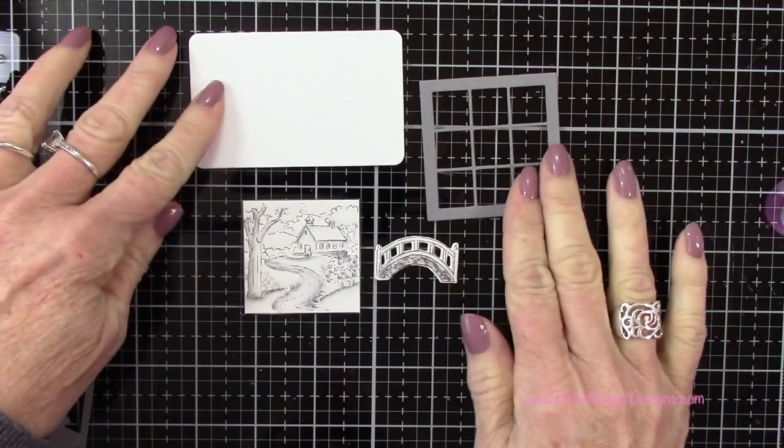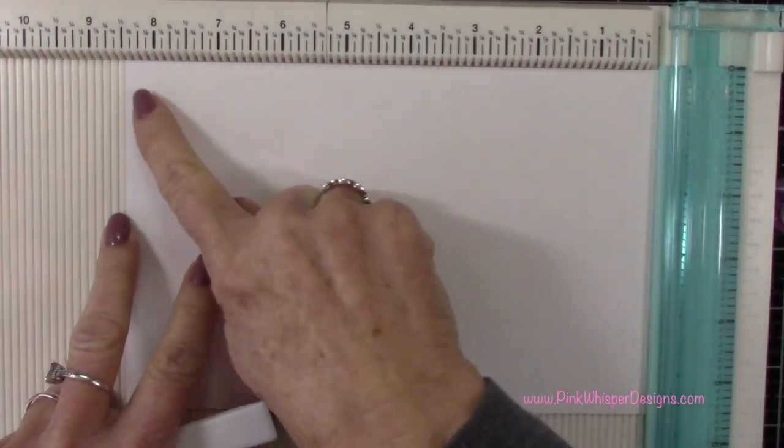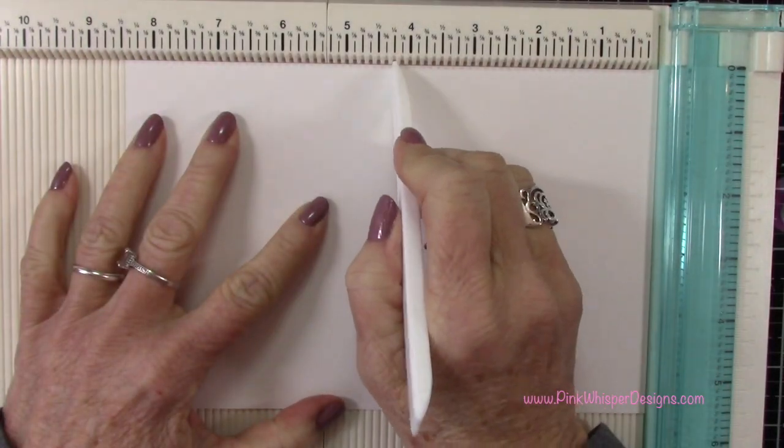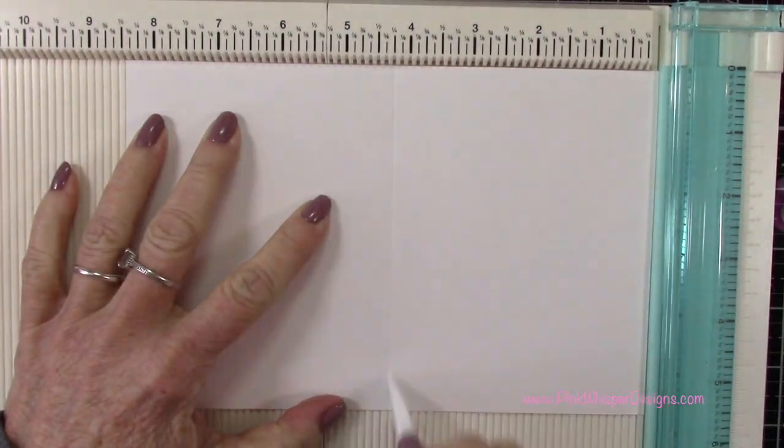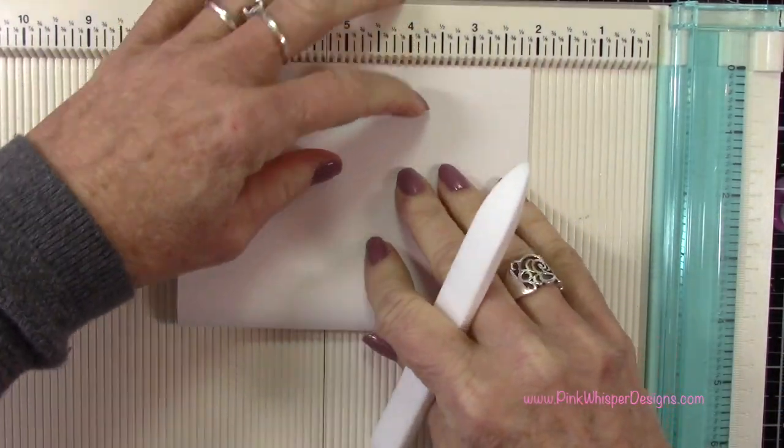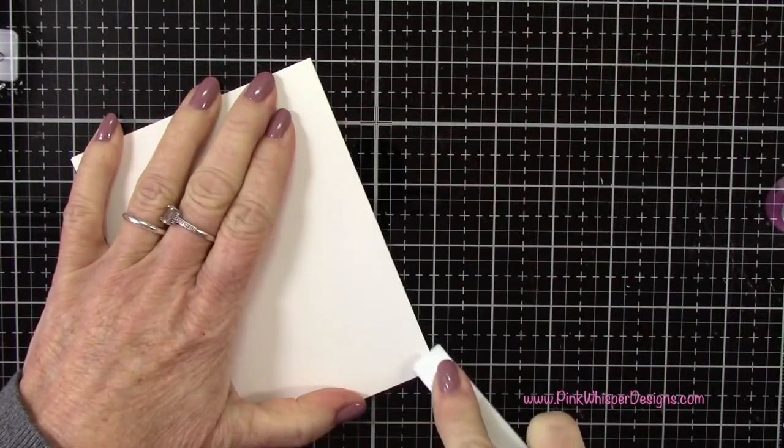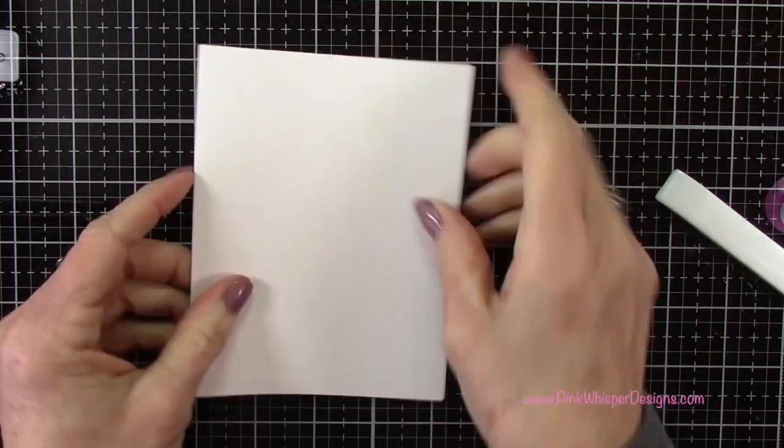Once I have everything die cut, I'm going to start with my card. I've got a card that measures five and a half by eight and a half and I'm going to score this at four and a quarter. I'm just pressing that out with my bone folder so this will be a standard A2 size card that measures four and a quarter by five and a half.